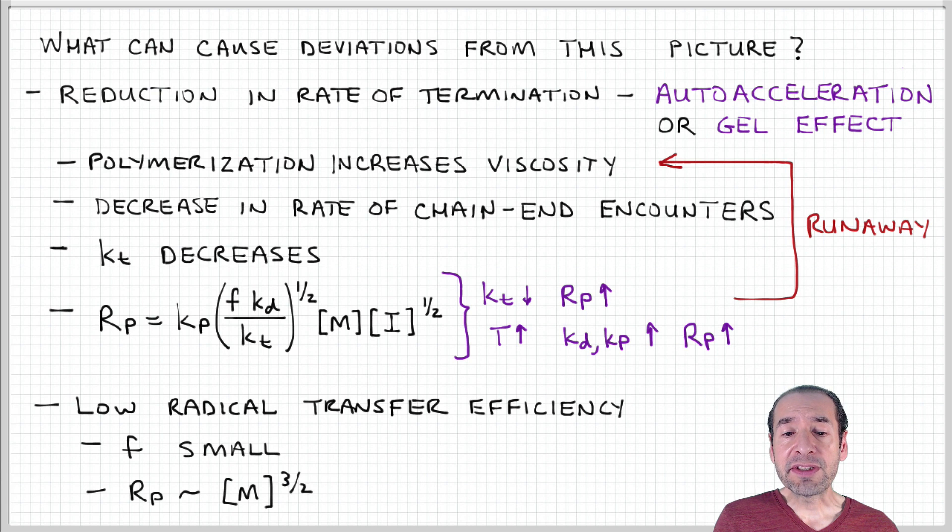Another limitation is in cases where there's low efficiency of radical transfer during the initiation process. If this efficiency factor is small, that's going to cause the rate of polymerization to deviate from the picture that we develop. Because again, our steady state assumption hinges on the fact that the initiation and termination rates are essentially equal.